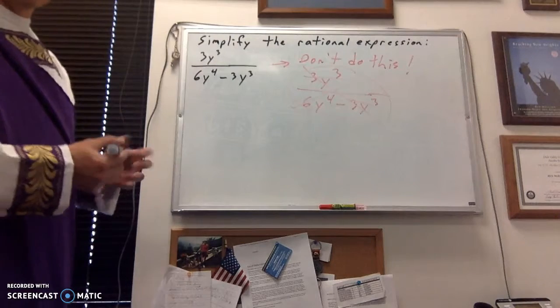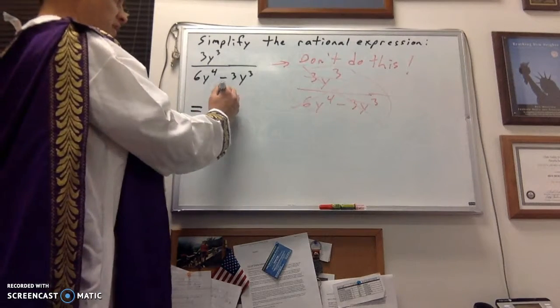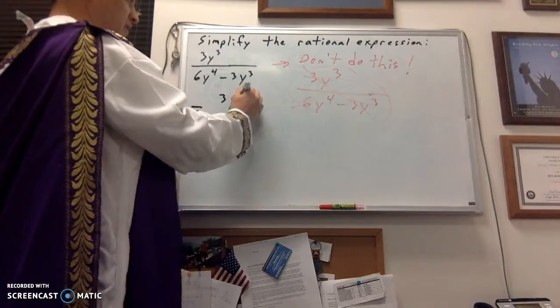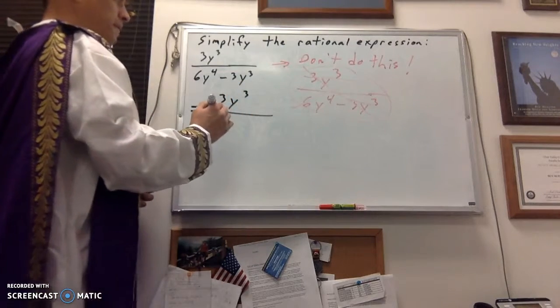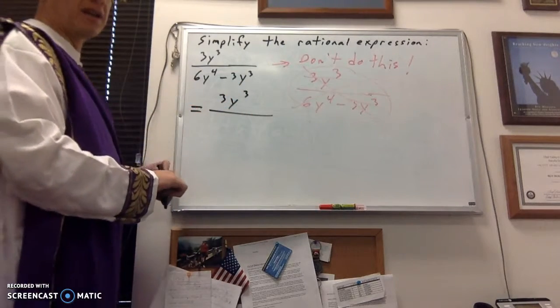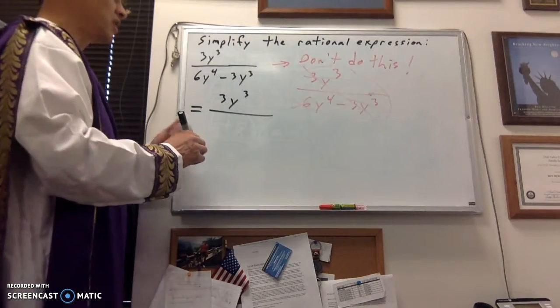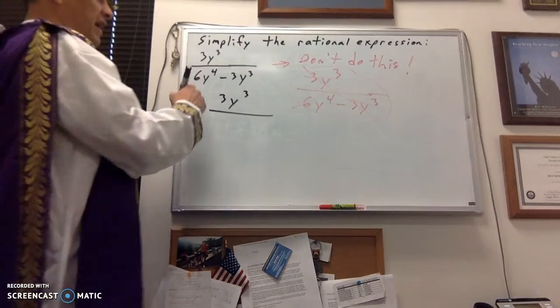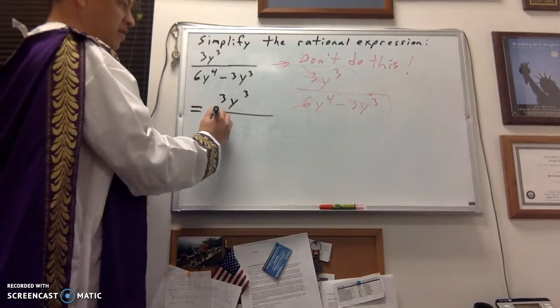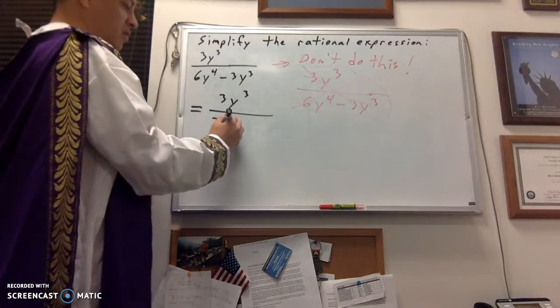So, what do you do instead? Well, if you've followed me along this far, you know that I've been saying, get pretty good at factoring, okay? Because it's going to be all over the place from here on out, and this is no exception. If we pull out our greatest common factor in our denominator, it turns out our greatest common factor is 3y cubed.